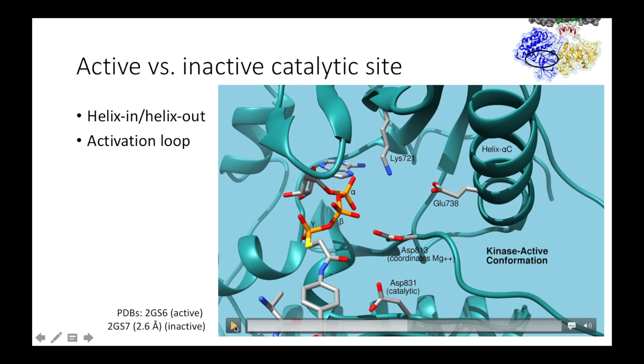Here are the alpha, beta, and gamma phosphoryl groups of the ATP molecule. In this active conformation, helix alpha-C is positioned close to the active site, with the ion pairing glutamate close to the hydrogen bonding lysine. Also note the magnesium coordinating aspartate is very close to the active site.